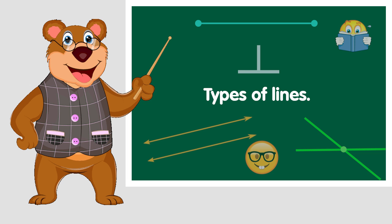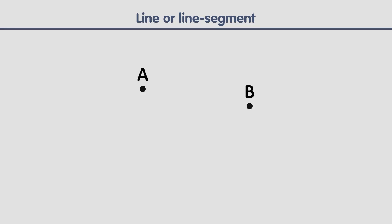Today we are going to learn some types of lines and the difference between a line and a line segment. Imagine that we draw two points — let's call them point A and point B. If we join these two points following a straight path from A to B, we create something called a line segment, and we name it line segment AB.